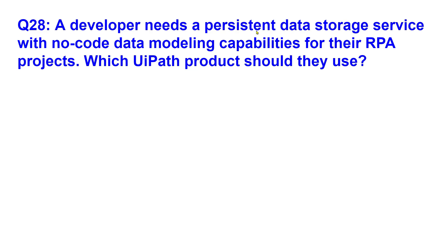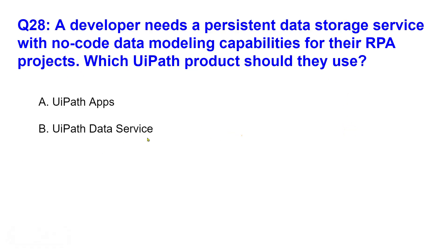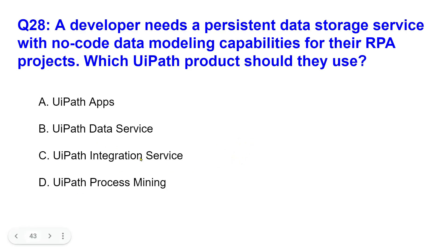Next question: a developer needs a persistent data storage service with no-code data modeling capabilities for their RPA projects. Persistent data storage means the data remains even when power goes off — unlike RAM, it keeps your data safe like a hard drive. Which UiPath product should they use? Options are: UiPath Apps, UiPath Data Service, UiPath Integration Service, or UiPath Process Mining.